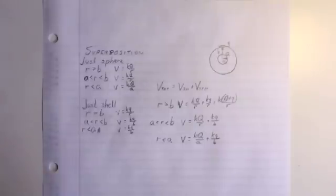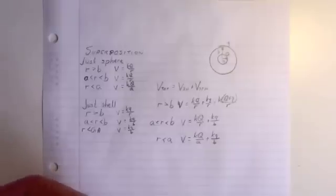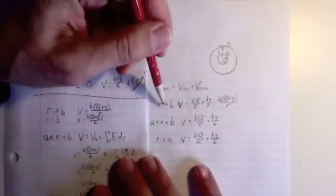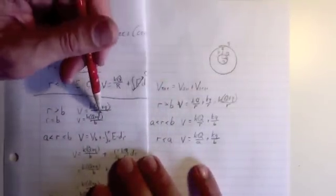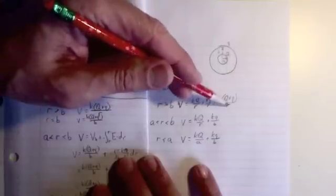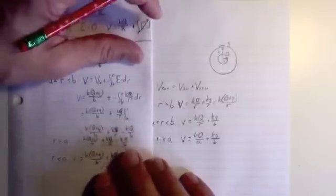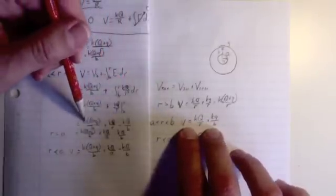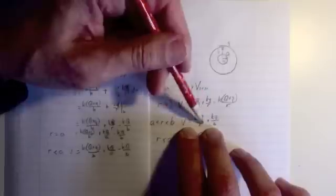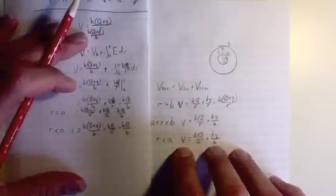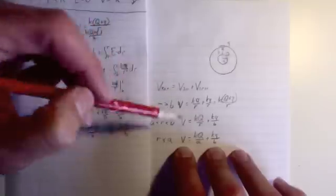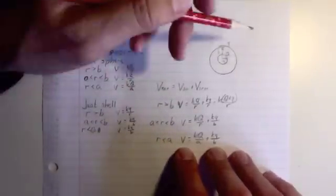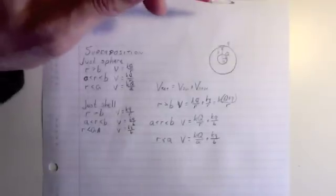Now, if we look back, at first I thought I'd done something wrong, but really what had happened is I had just forgotten to combine terms. So here's r greater than b, outside of b. That's the exact same expression we had before, (Q plus q) over r. For a less than r less than b, look how much work we had to do before to get this. This is what I got regular, this is what I got superposition. But if you look at this, this has a kq over b and a negative kq over b. So they end up being the same things. Similarly, for r less than a, same sort of thing. This superposition is very powerful. It makes it easier to do some of these problems.